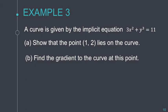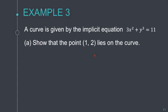Example 3: a curve is given by the implicit equation 3x² + y³ = 11. First, show that the point (1, 2) lies on the curve. Substitute x = 1 and y = 2: 3(1²) + 2³ = 3 + 8 = 11. So (1, 2) lies on our curve.